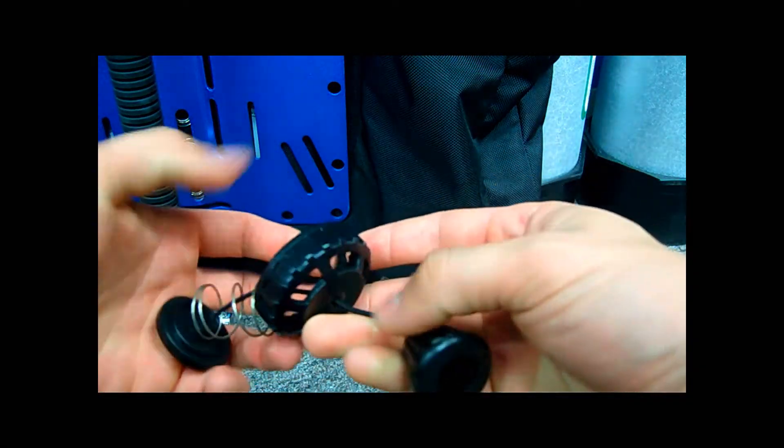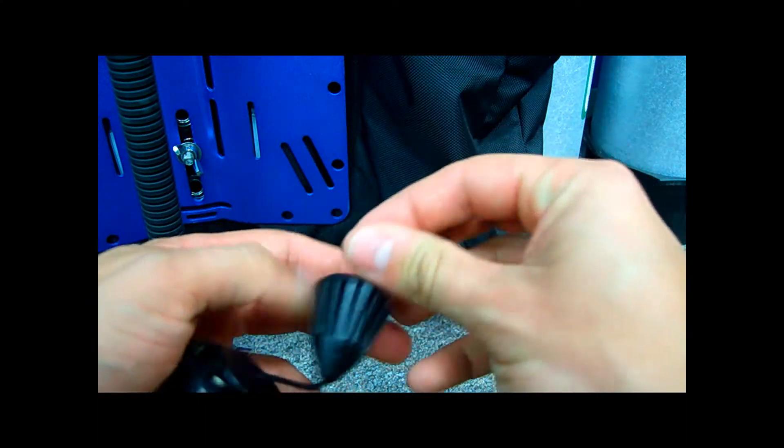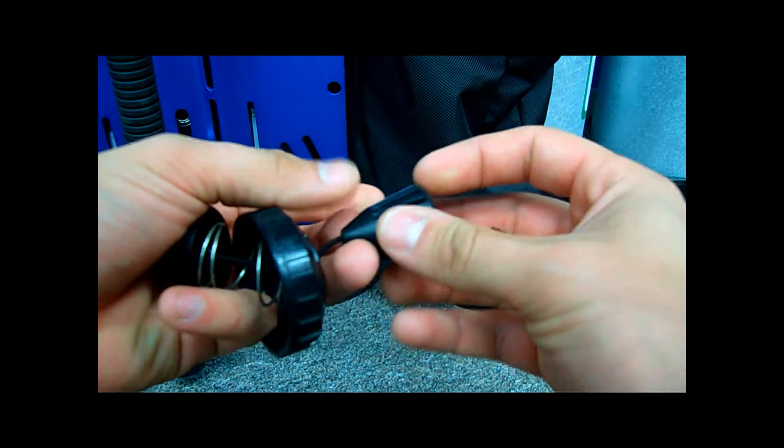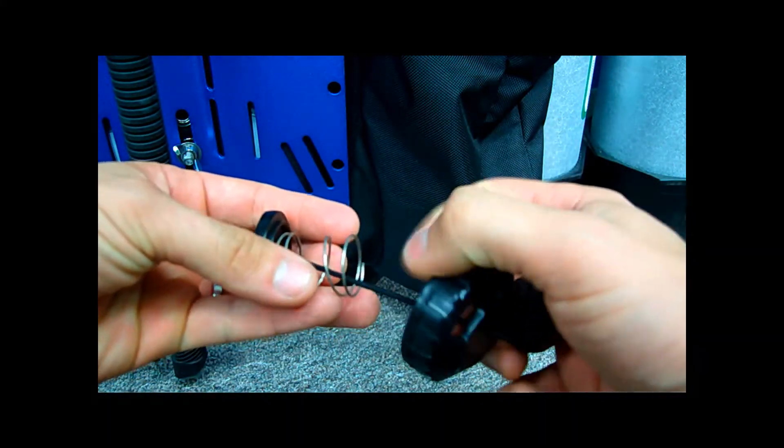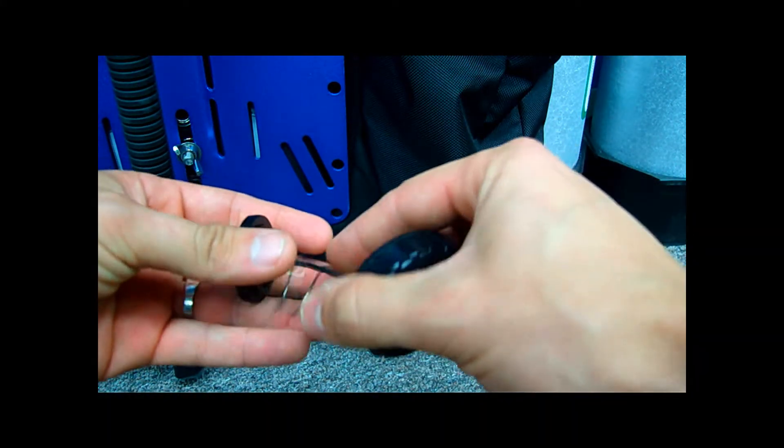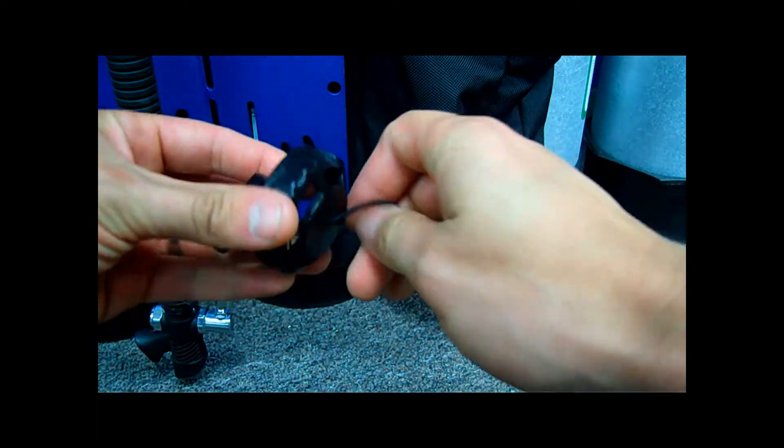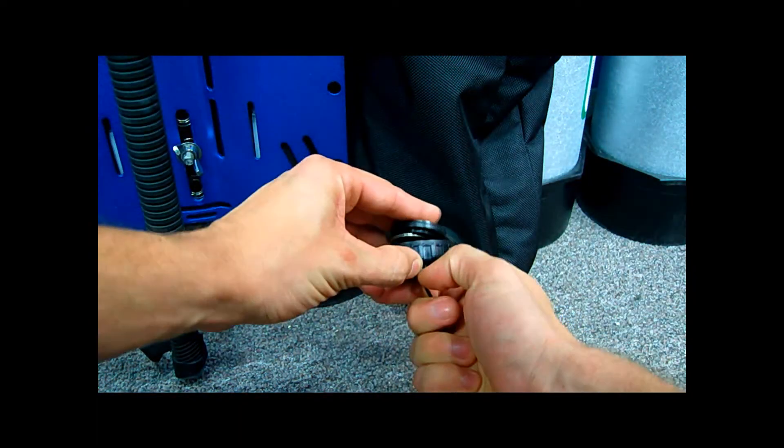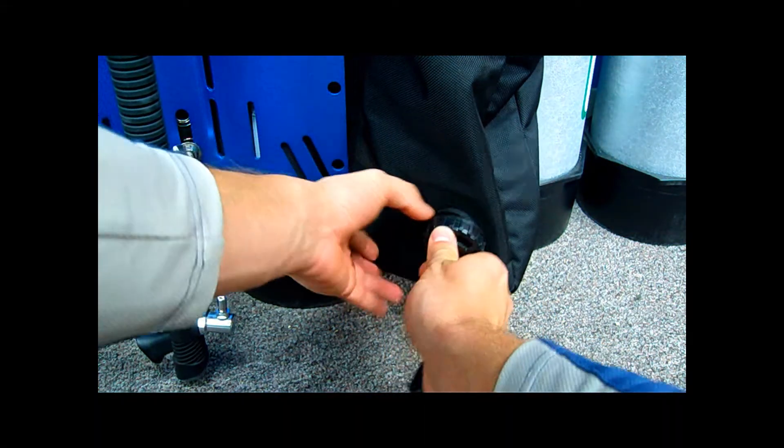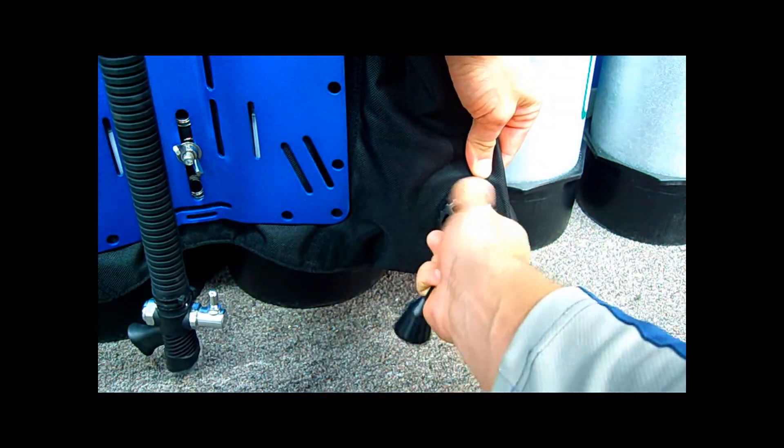If you were to replace it, you would actually pull the pull knob off by undoing the knot. Pull the pull knob off, pull this off, take the spring out, put a new spring in, put it all back together, and then screw it back together.